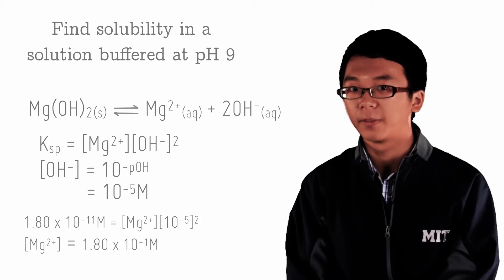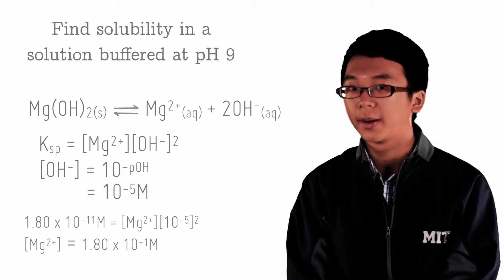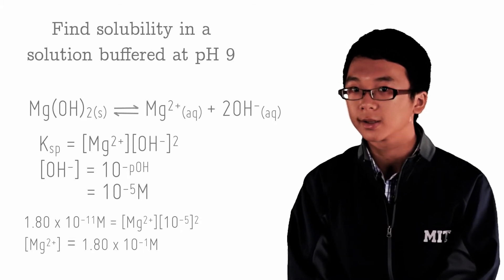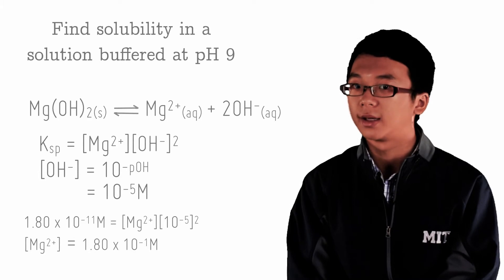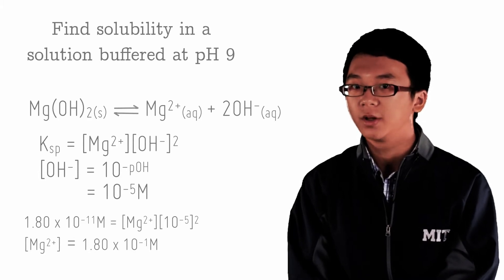The contribution of hydroxide from magnesium hydroxide is negligible compared to the hydroxide already in the solution, especially because it is buffered. So we can omit that term and solve the simple equation for one unknown.